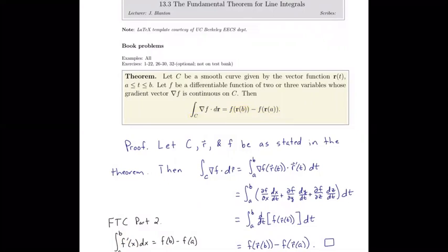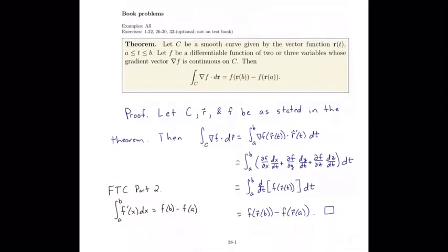Let's have a quick look at the proof of this result. We let c be the smooth curve as given, r is the parametrization of c with t from a to b, and f is a differentiable function of three variables with a continuous gradient vector. The left side of the equation — the line integral over the gradient of f — by definition equals the integral from a to b of gradient of f at r(t) dotted with r prime of t.